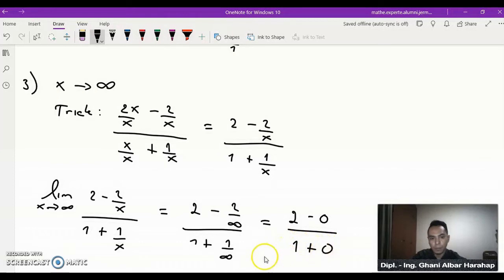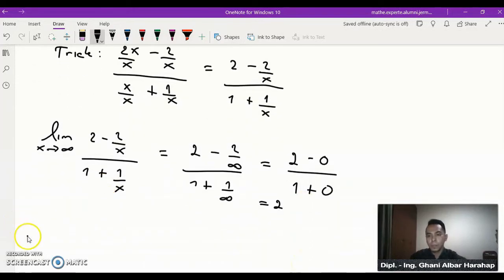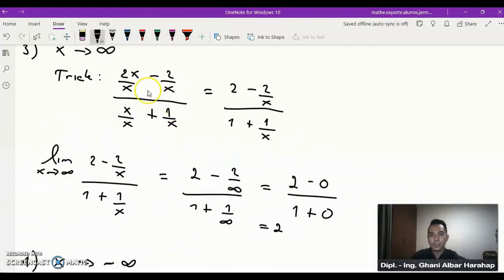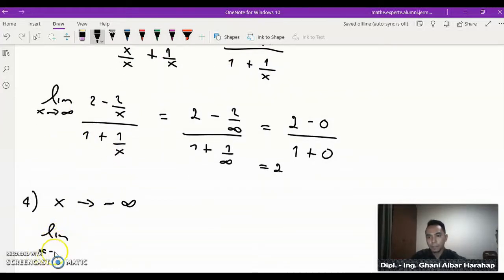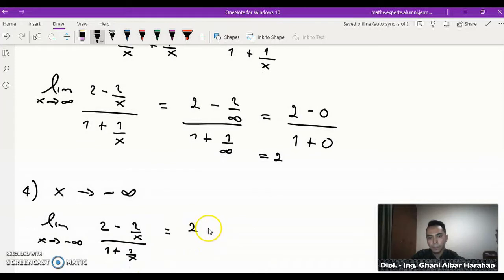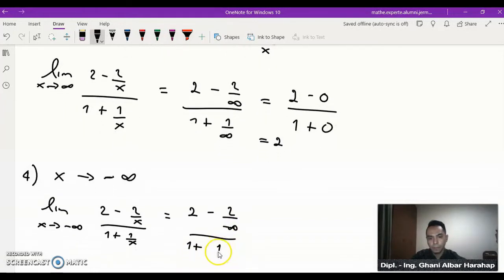Same thing we do for x goes to minus infinity, so we can just take our expression here, just change the limit to minus infinity. And it's also zero here, it's also 2.